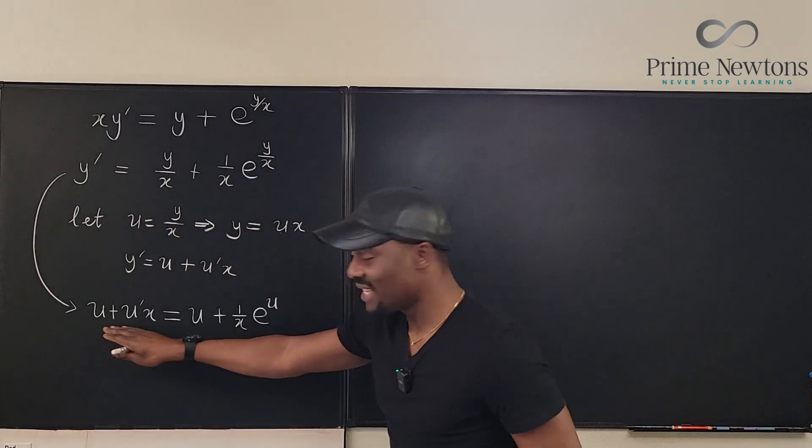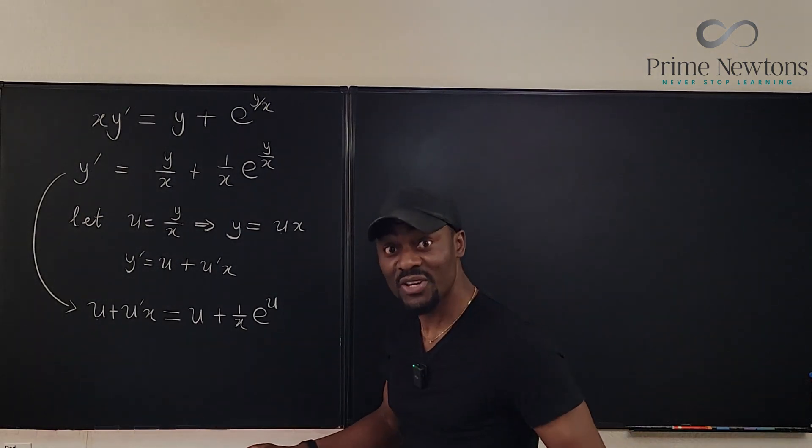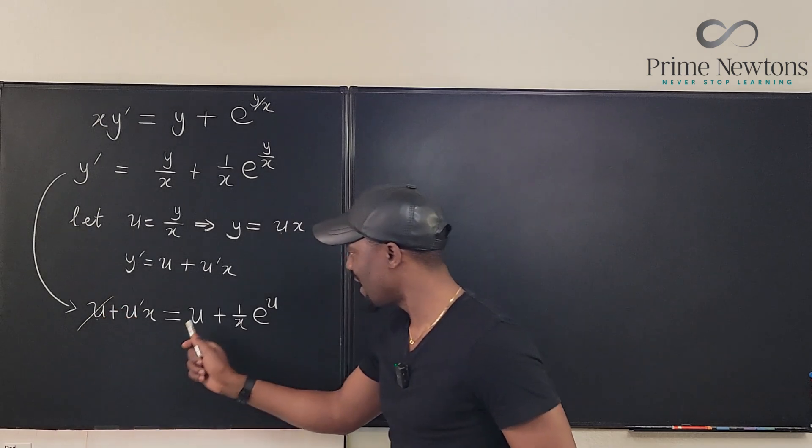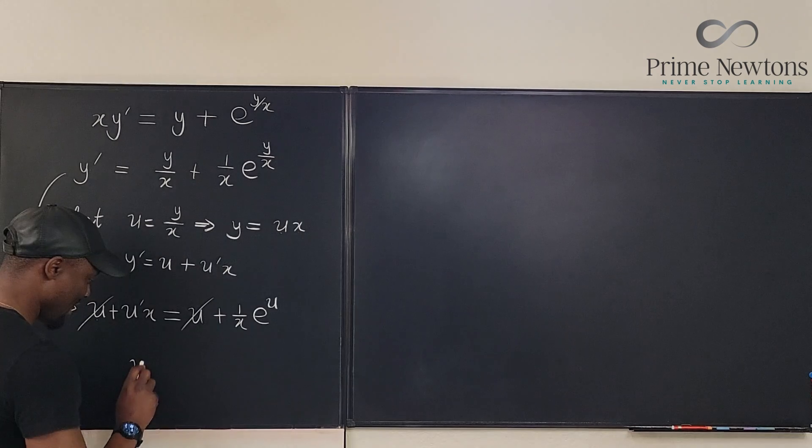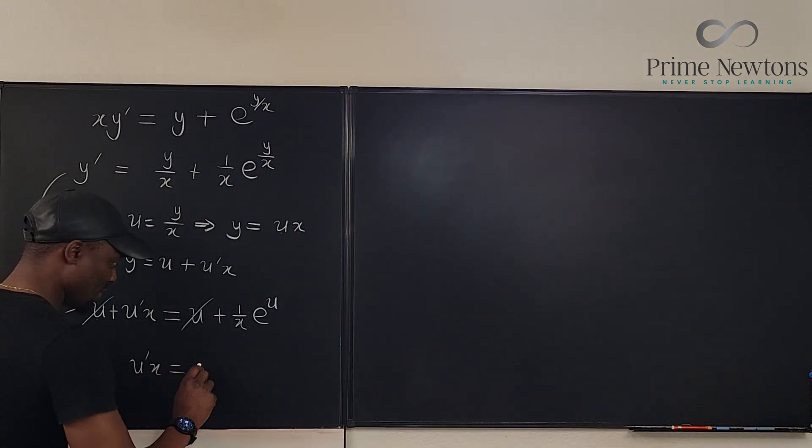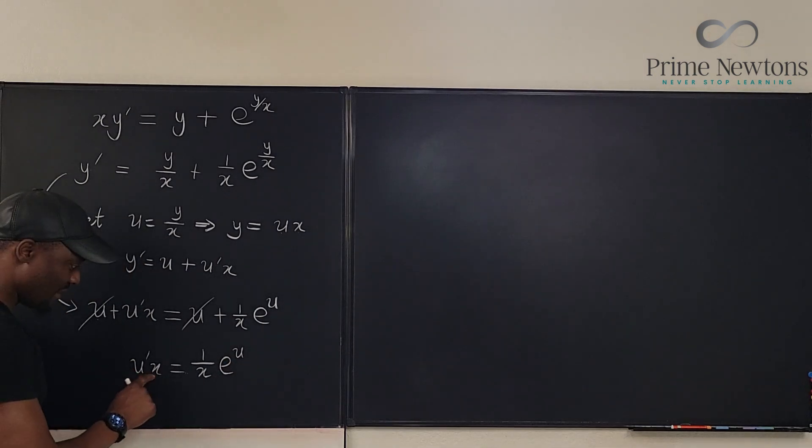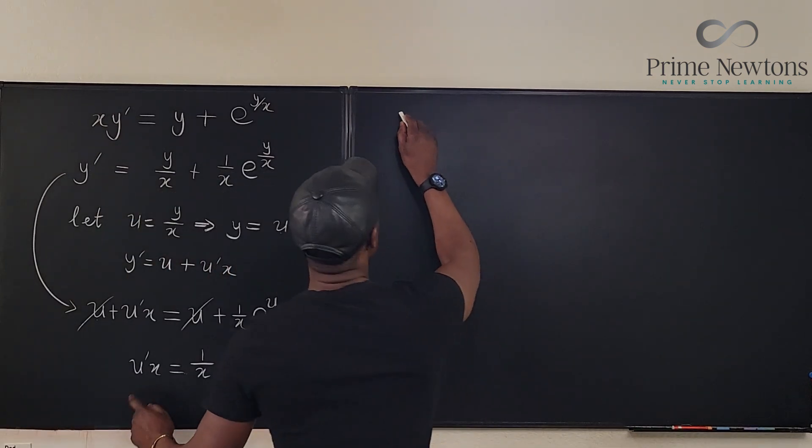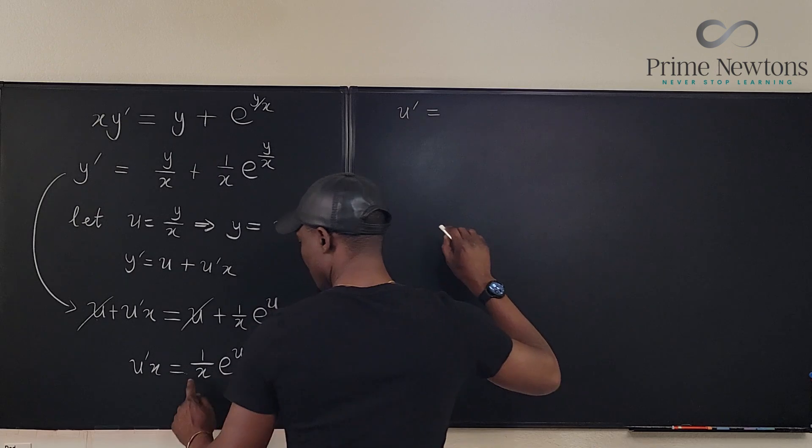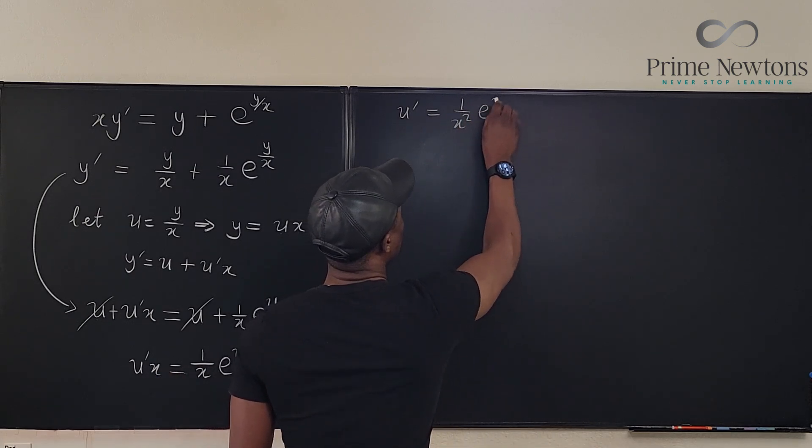But because this is an equation you have u here you have u here. You can cancel out both u's like that. What do you have? We have u prime of x is equal to one over x e to the u. We can isolate this by dividing both sides by x so that what we have next is u prime will be equal to one over x squared e to the u.